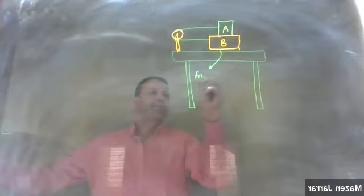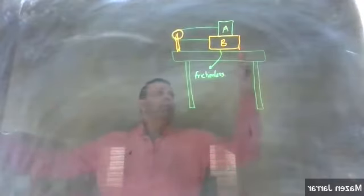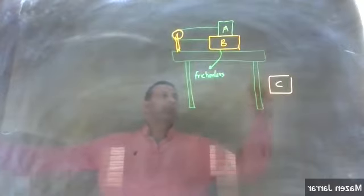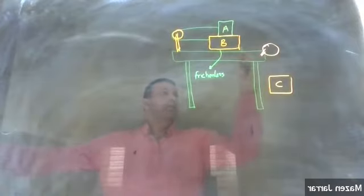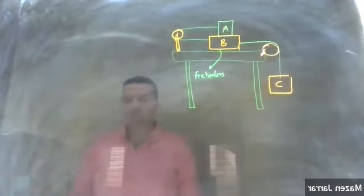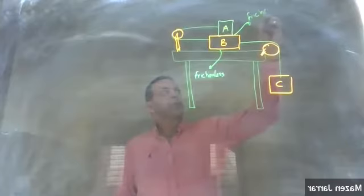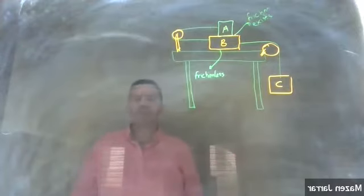The surface between the blocks and the bench is frictionless. The whole system is attached to another mass called C, which goes through another pulley. Between A and B there is friction. The system is at rest — when you let C go, the system does not move.